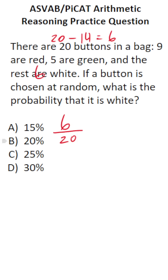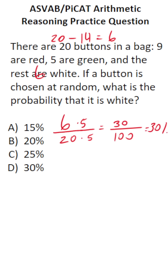So the odds of picking a white button at random are 6 out of 20. We have to convert this to a percent. There are two ways you can do that. You can multiply 20 and 6 by 5. 20 times 5 is 100, 6 times 5 is 30. 30 over 100 is the same thing as 30%.